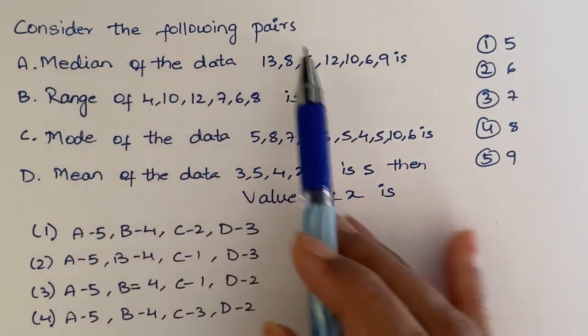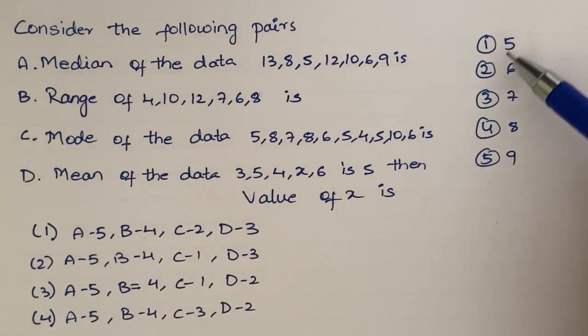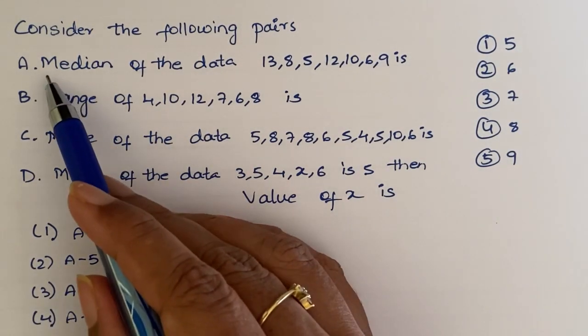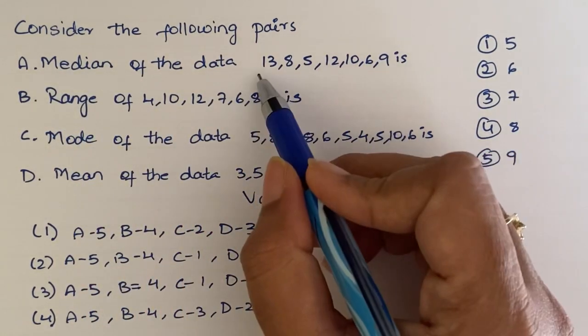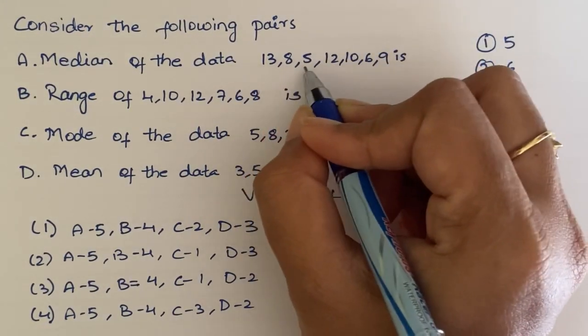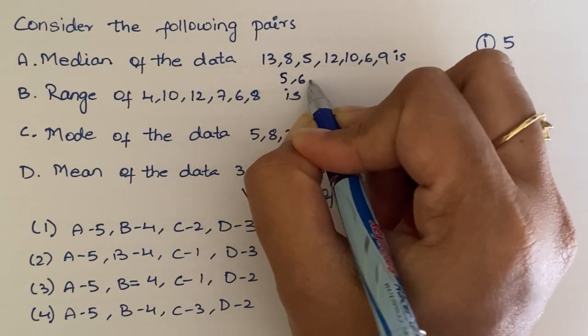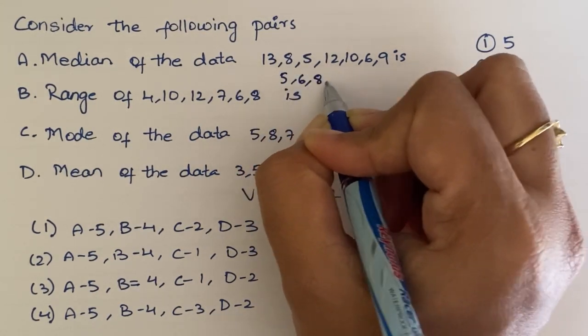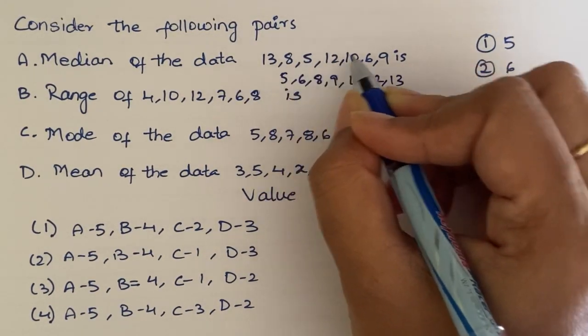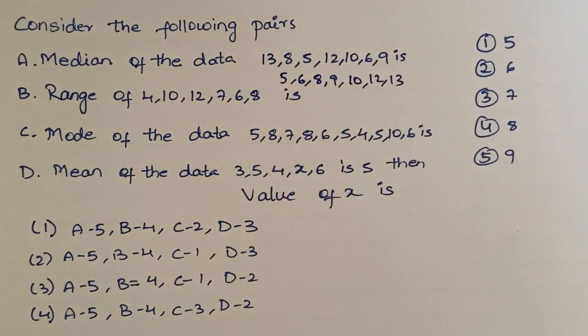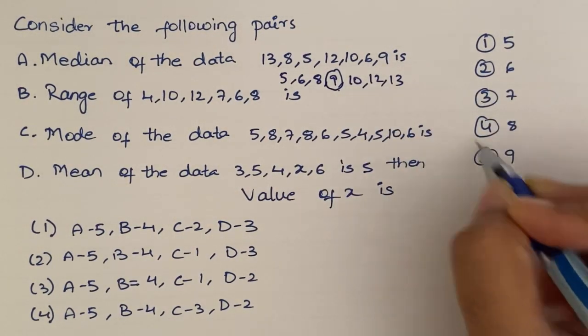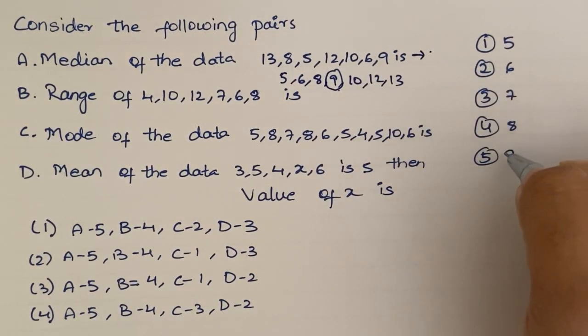Now next question. Consider the following pairs. Some A, B, C, D are given pairs, here 1, 2, 3, 4, 5 are given. So here some options are given, which options are correct we have to search. So, first question - median of the data. We have to first arrange the data in ascending order. This is raw data. So, first one will be 5, 6, 8, 9, 10, 12, 13. These are 7 numbers. 7 is an odd number, so the center - this number will be median. So, 9 is the median. So, A is fifth option.